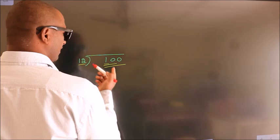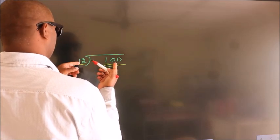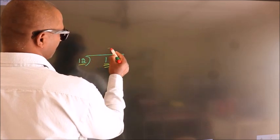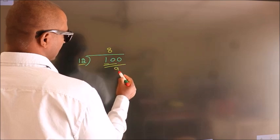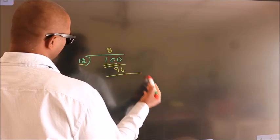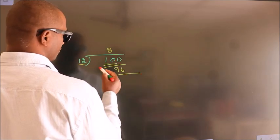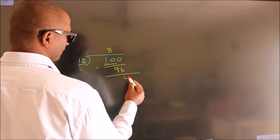100. A number close to 100 in the 12 table is 12 times 8, which is 96. Now we subtract and we get 4.